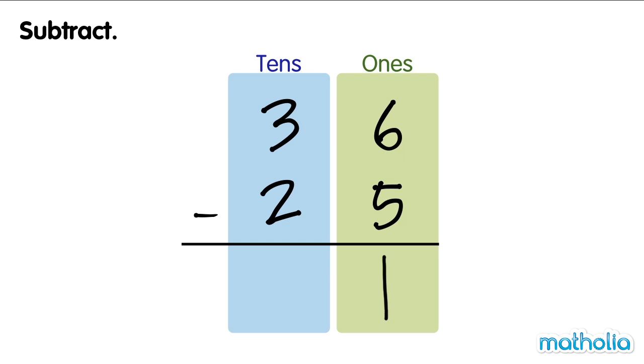Next, subtract the tens. 3 tens minus 1 ten equals 1 ten.